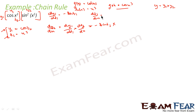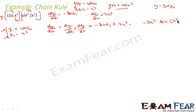dt1/dx is nothing but 3x², because t1 = x³. So I have minus sin(t1) · 3x². Since t1 is x³, I can write this in terms of x: this becomes minus 3x² sin(x³). So this is my derivative of the first function, dy1/dx = -3x² sin(x³). This is the value I required.